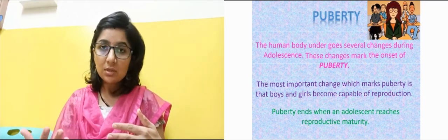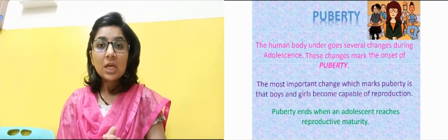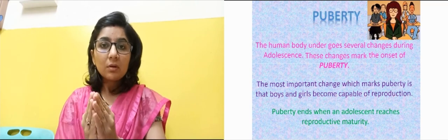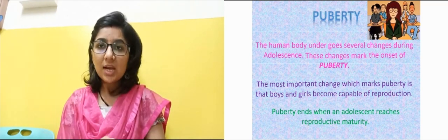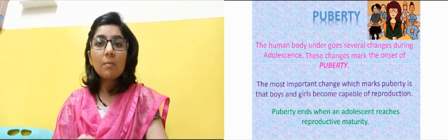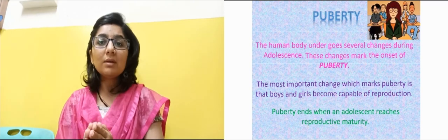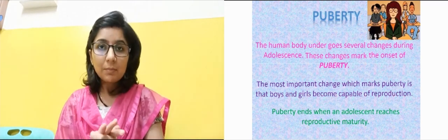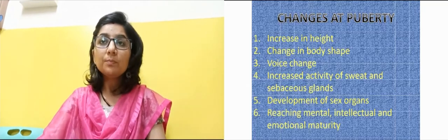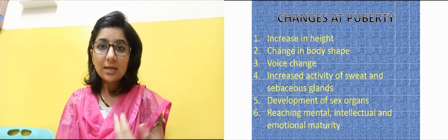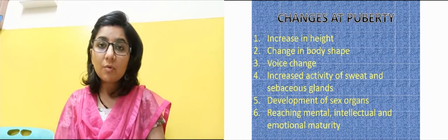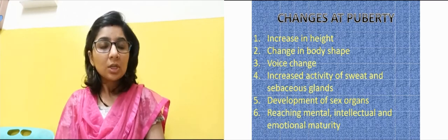Puberty ends when an adolescent reaches reproductive maturity. Once the boy or girl reaches reproductive maturity, the puberty phase ends. These are the key concepts of puberty and adolescence.